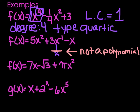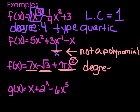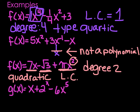The third one: 7x minus the square root of 3 plus pi times x squared. Some of you might think it's not a polynomial because of the weird symbols, but the square root of 3 is just a number, and pi is just a number. So this is a sum of monomials. Our highest power is 2, so the degree is 2 — that makes it quadratic. The leading coefficient is not 7 just because it comes first — it's what goes on the highest power, which is pi.